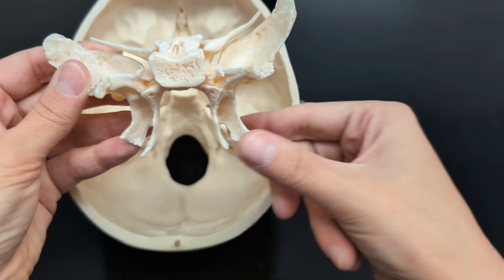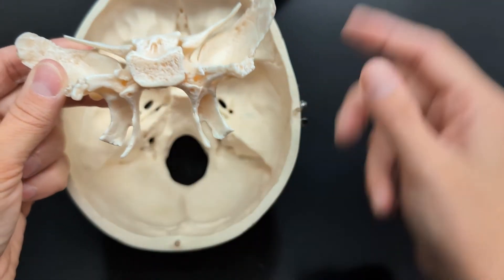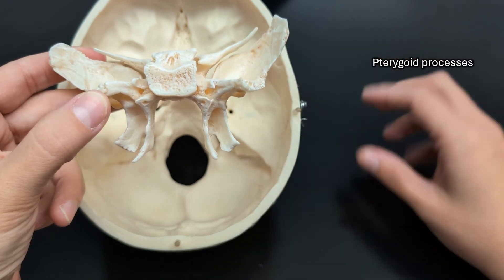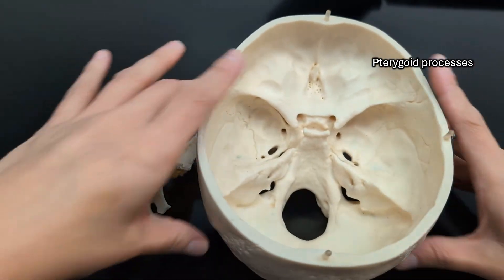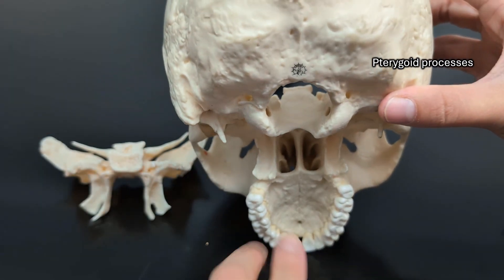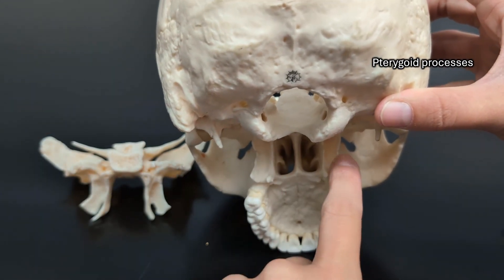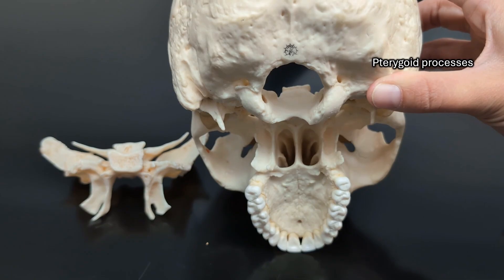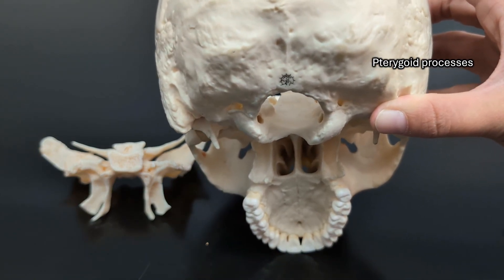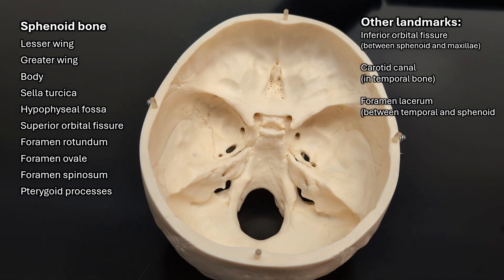If we flip the bone up, these little feet hanging down are the pterygoid processes. So when you rotate the skull up like that, those little feet are the pterygoid processes. That's all I have to say about the sphenoid bone. I hope this was helpful — have a great day and have fun learning!